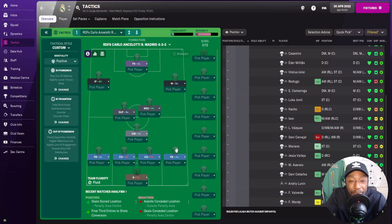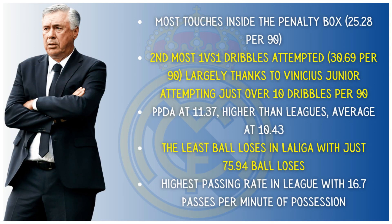Here we are with the 4-3-3. I'm going to pop up on screen key statistics to help us create this tactic. Real Madrid touches the ball inside the penalty box with 25.28 per 90. They have the second most 1v1 dribbles attempted, largely thanks to Vinicius Junior attempting just over 10 dribbles per 90. Their PPDA is at 11.37, higher than the league average of 10.43, so they're not an intense pressing side. They have the least ball losses in La Liga at 75.94 per game.